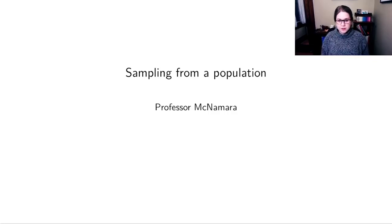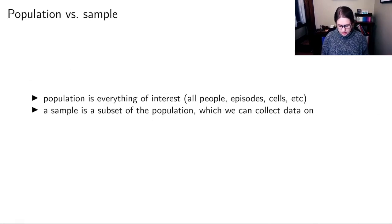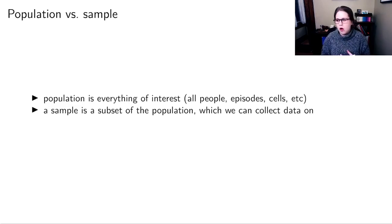We're going to talk about sampling from a population. Before we do that, we need to know the difference between a population and a sample. A population is everything that's of interest to you — all the people in the United States, all the episodes of Bob Ross's television program, all the cells in the human body, something like that.